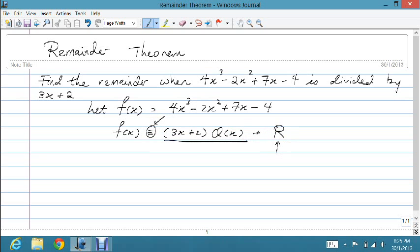In this case I let x equal negative 2 over 3. So on the right hand side we have 3 times negative 2 over 3 plus 2 times q of negative 2 over 3 plus r.